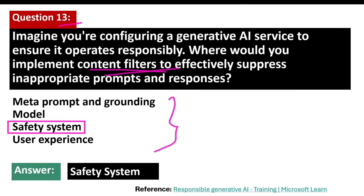Some real-world use cases of content filtering: social media platforms use content filtering to protect users from hate speech, cyberbullying, or explicit content. For example, Facebook uses content filters to detect and remove posts that violate community standards related to hate speech, violence, and explicit content.